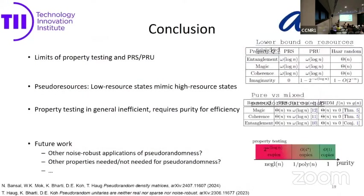In conclusion, I showed the interplay between pseudorandomness and property testing: you can use PRS and PRU states to give limits on property testing, and property testing gives limits on PRS and PRUs. I showed pseudo-resources, where low-resource states mimic high-resource states, and PADMs can completely hide resources using mixed states. Property testing is in general inefficient. Future work includes noise-robust applications of pseudorandomness realizable in the near-term or early fault-tolerant era, and mapping out which quantum resource properties are important or unimportant for pseudorandomness.